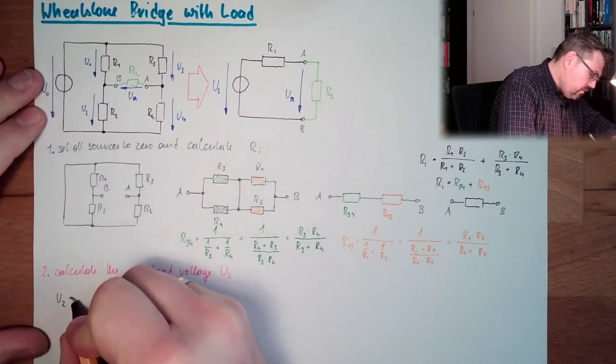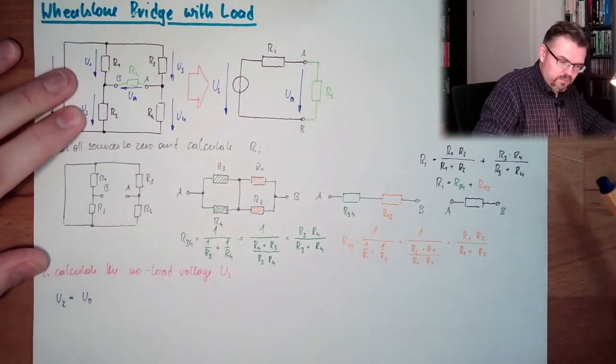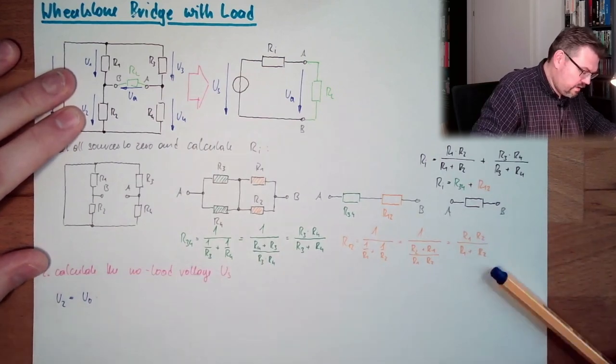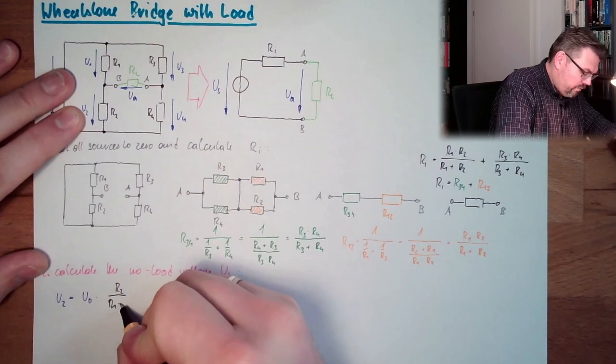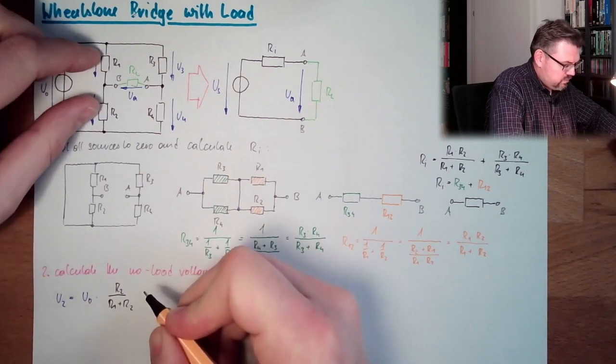Let's see. U2 equals U0 multiplied by R2 divided by R1 plus R2. Alright, so let's calculate the no-load voltage.